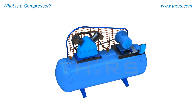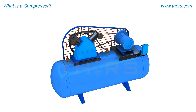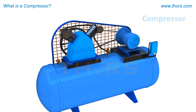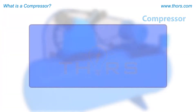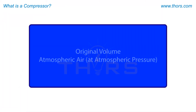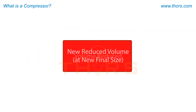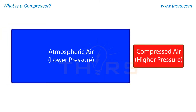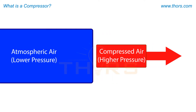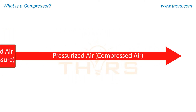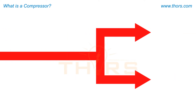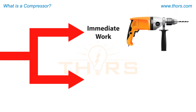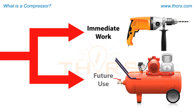In order to produce compressed air, a device or machine called a compressor is used. These machines take in atmospheric air at atmospheric pressure and reduce the volume in which the air is contained, thereby increasing the air pressure to a pressure higher than the atmospheric pressure. The pressurized air is then delivered out of the machine as compressed air, which can be used for immediate work or stored in a tank for future use.